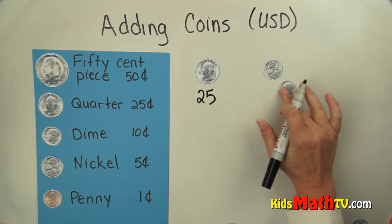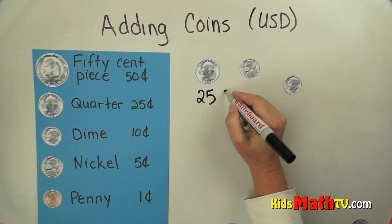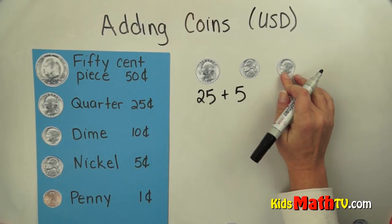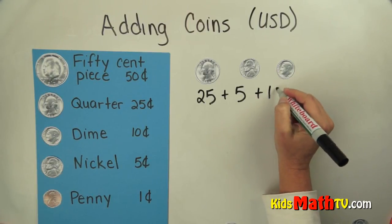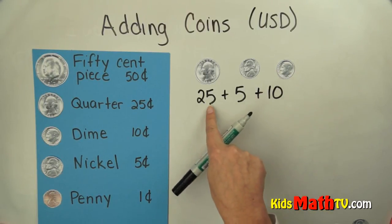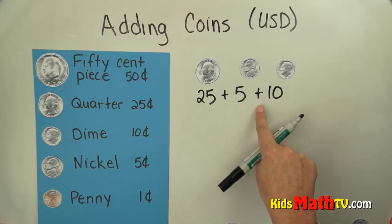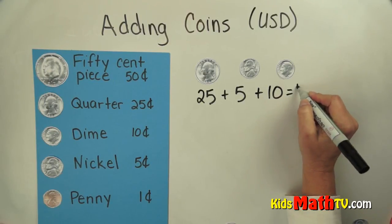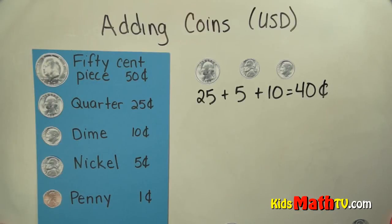I'm going to add my nickel to that. 25 plus 5 is 30, and then I can add a dime which is worth 10 cents. So 25 plus 5 is 30, plus 10 more equals 40 cents.